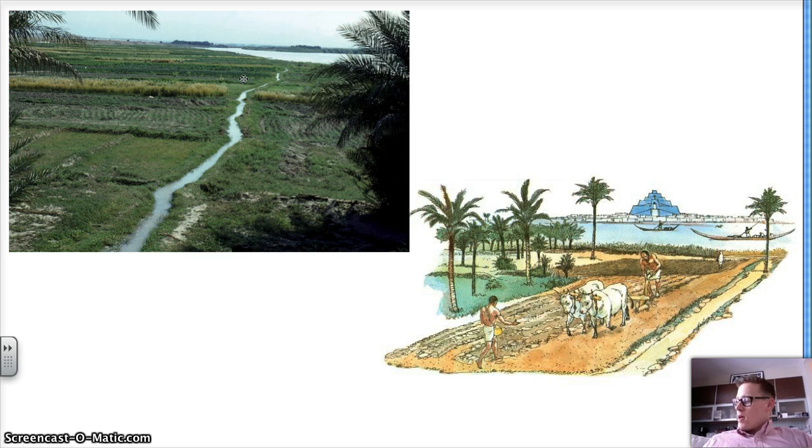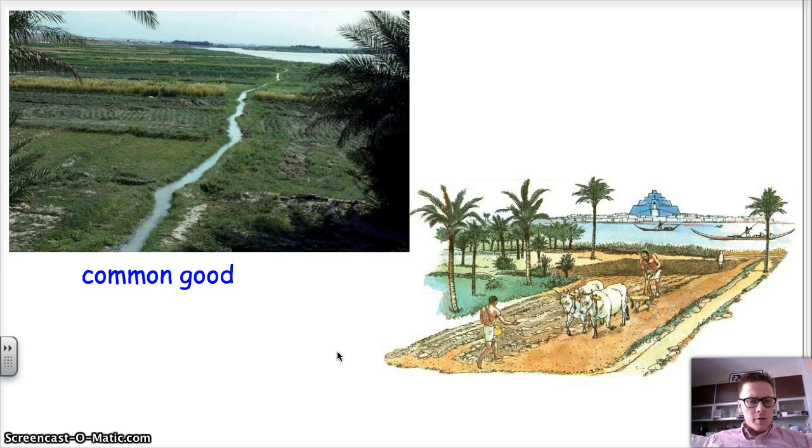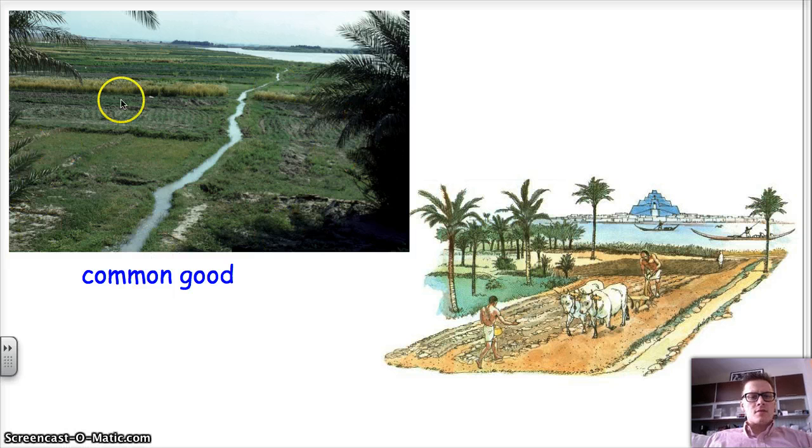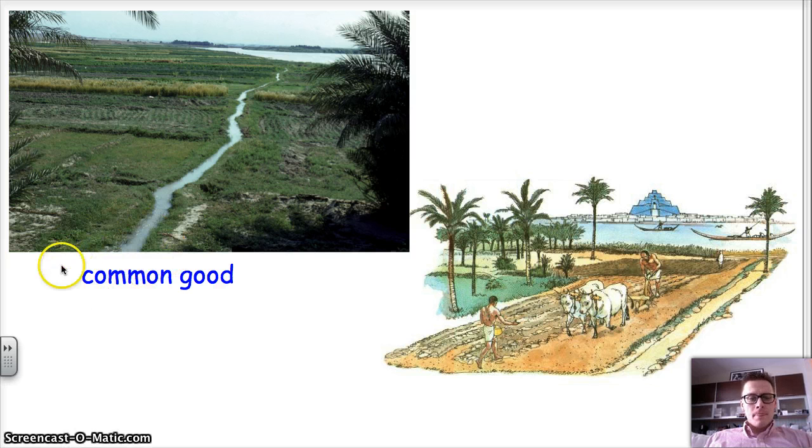When we have something that will benefit everyone, we call that the common good. And what is a common good? A common good is something that everyone benefits from. So all these people that lived around this benefited from this trench that was dug. But they couldn't have done it on their own. They had to do it in common. They had to share that.